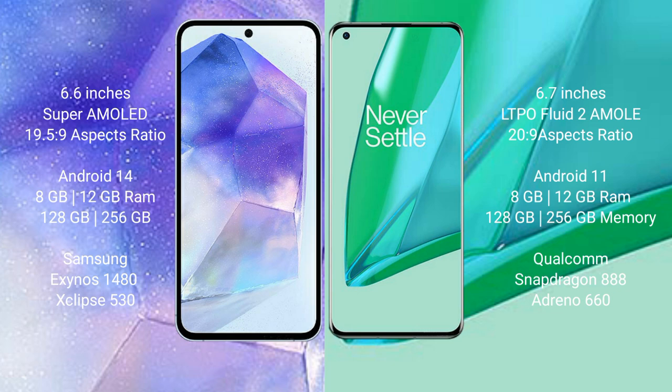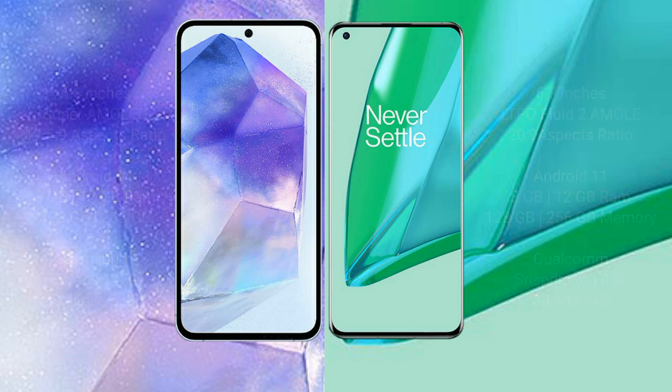OnePlus 9 Pro comes with 8GB or 12GB RAM, 128GB or 256GB internal storage, Qualcomm Snapdragon 888 processor, and Adreno 660 GPU.